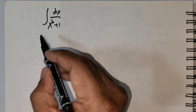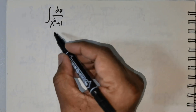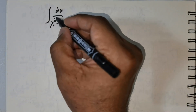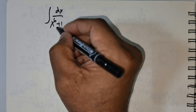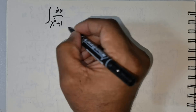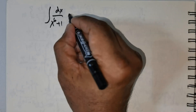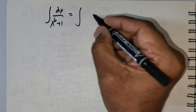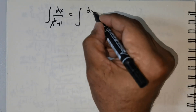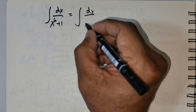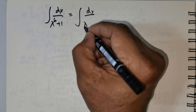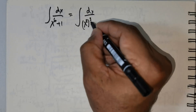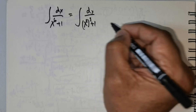Good day everybody, we got a very interesting question. We are expected to integrate the integral dx over x to the power of 6 plus 1. Foremost, I would like to rewrite this as integral dx over x squared raised to the power of 3 plus 1.